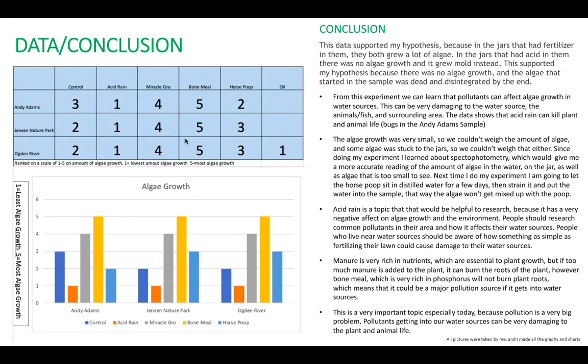Bone Meal produced the most for all of them. Miracle Gro was second, with the control and horse poop changing things up a little bit. Here's the graph of my data table above.